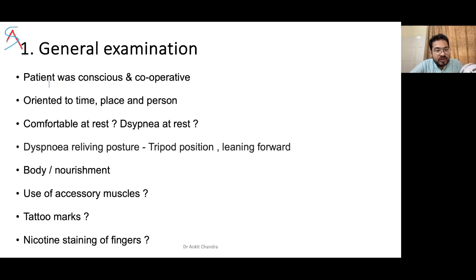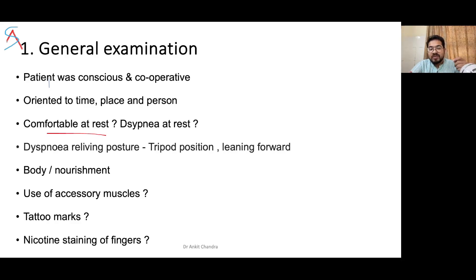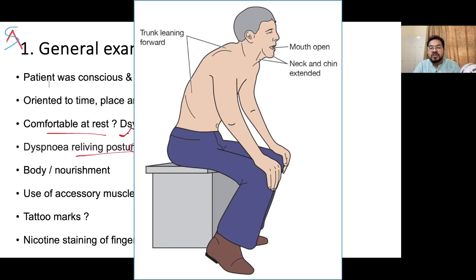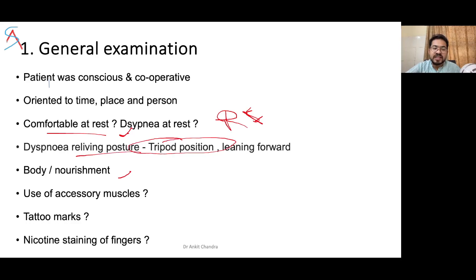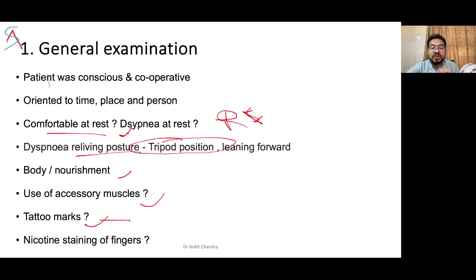The patient was conscious, cooperative, oriented to time, place, and person, comfortable at rest. If a patient is not comfortable at rest, that could indicate frontal lobe dysfunction. In cardiac or respiratory pathology, the patient will have dyspnea at rest. Look for the tripod position — patient leaning forward — comment on body and nourishment, use of accessory muscles like sternocleidomastoid, nasal alae, scalene group. Comment on tattoo marks, which may indicate HIV plus TB or sarcoidosis, and nicotine staining of fingers indicating tobacco use.